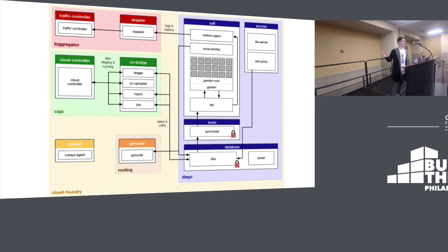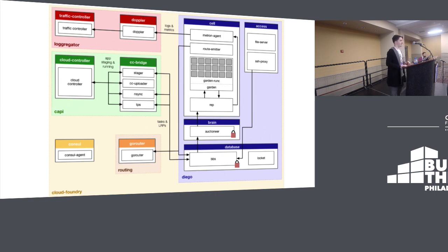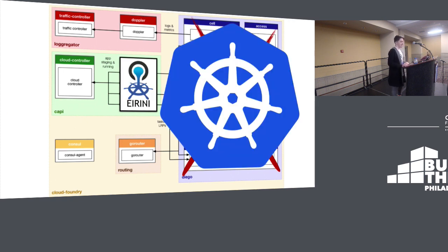This is the current status quo, and this is what Jules calls a squintogram - you don't really read the boxes, you just squint and determine that there's a lot of them. Focus on the big blue bits, which is Diego, the current Cloud Foundry scheduler. Looking at this picture, how do we actually put Kubernetes in here? Pretty simple: we let Kubernetes do what Kubernetes does best, which is schedule containers. And in between the Cloud Foundry bits and Kubernetes, we have a small layer called Irini which will tie everything together.